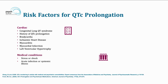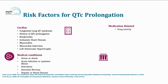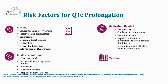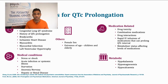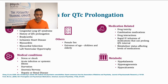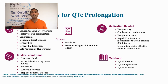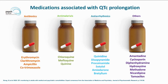Medical conditions such as acute stress or shock, acute infection or systemic illness, and starvation or anorexia nervosa also contribute. Medication-related aspects include drug toxicity, medication combinations, and intravenous medications associated with QTc prolongation. Metabolic aspects include hypokalemia, hypomagnesemia, or hypocalcemia. Additionally, female sex is a risk factor, as females are more vulnerable, and extremes of age — such as children or the elderly — also increase risk.